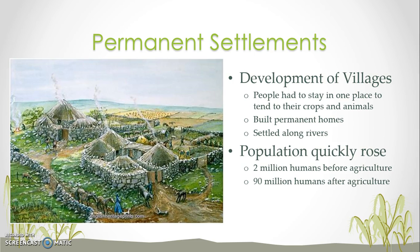The population began to rise quickly. Whenever there is an abundance of food, more population can be supported. And so you end up with 90 million humans, opposed to 9 million before the development of agriculture.